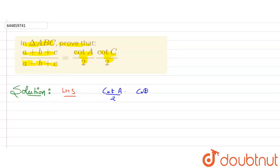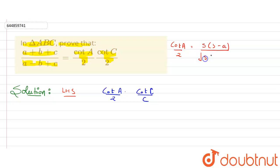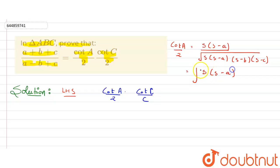The LHS is cot(A/2) multiplied by cot(C/2). For cot(A/2), we have the formula: the numerator is s(s - a), and the denominator is delta, where delta can be written as the square root of s(s - a)(s - b)(s - c). This simplifies to the square root of s(s - a) divided by (s - b)(s - c).